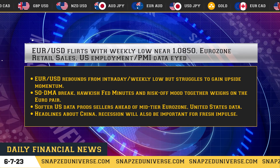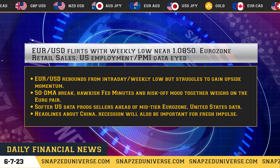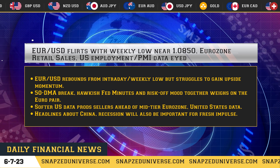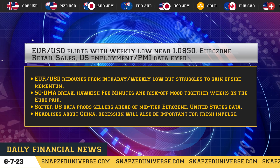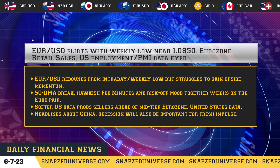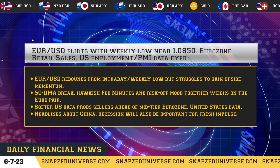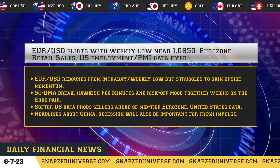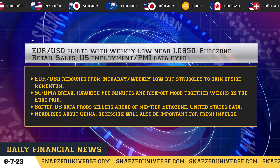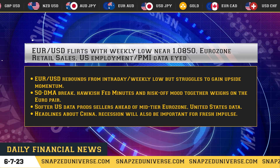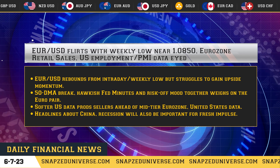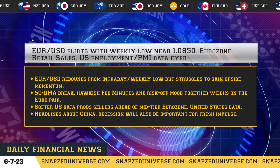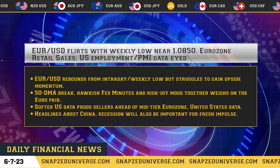EUR/USD flirts with a weekly low near 1.0850 ahead of Eurozone retail sales and US employment PMI data. The pair rebounds from its intraday and weekly low but struggles to gain upside momentum. A 50 DMA break, hawkish Fed minutes, and risk-off mood weigh on the euro pair. Softer USD data prods sellers ahead of mid-tier Eurozone and United States data. Headlines about China recession will also be important for fresh impulse.